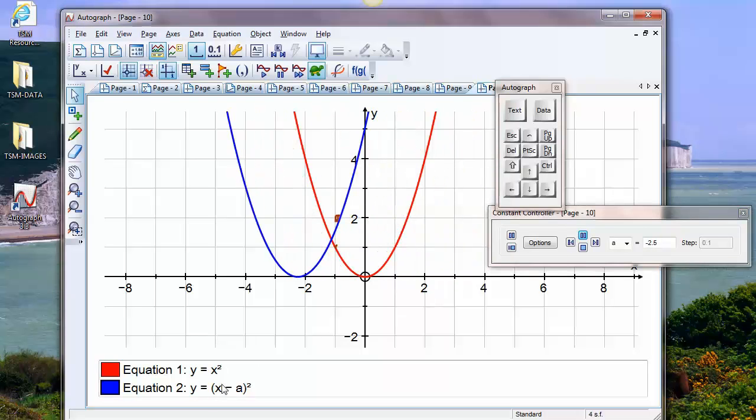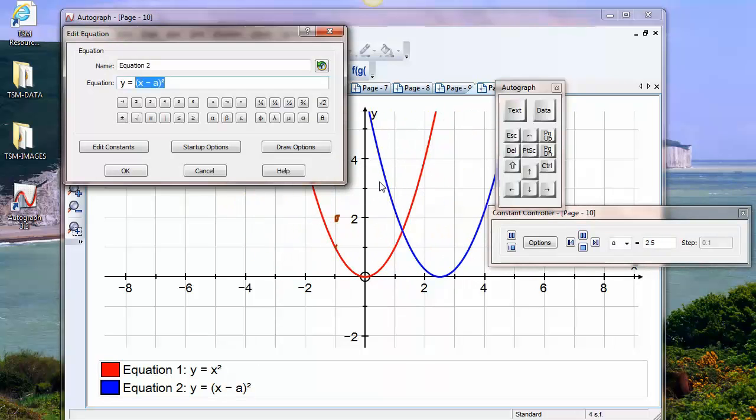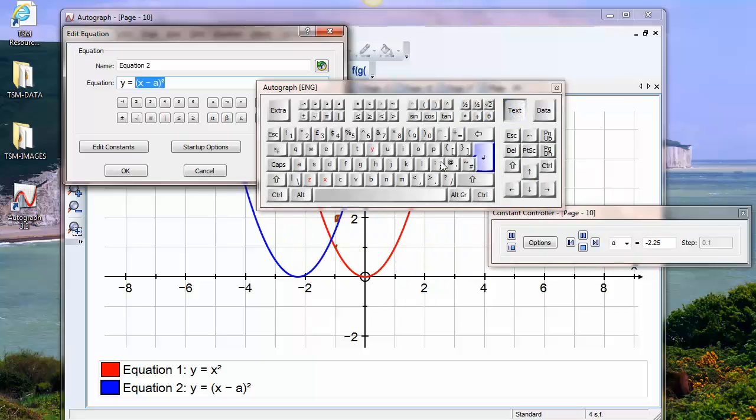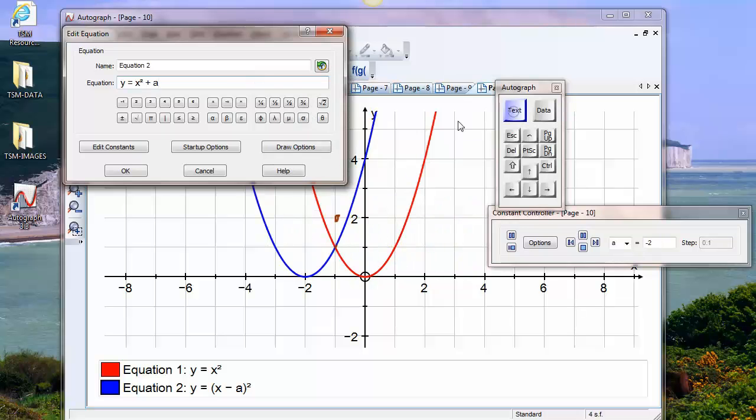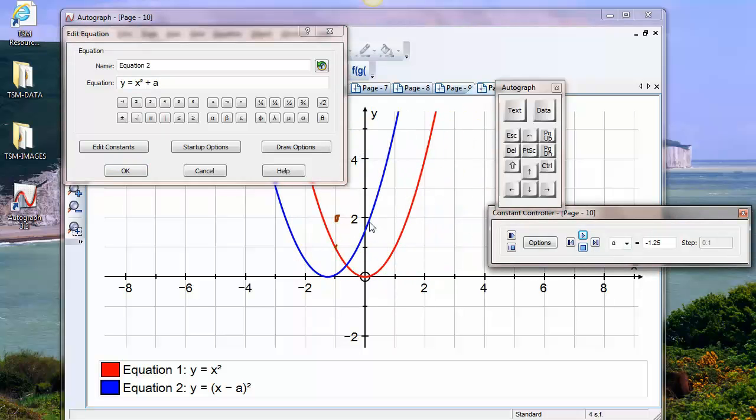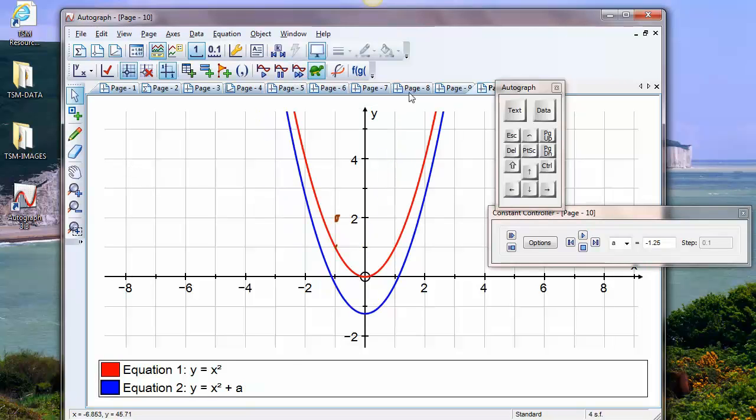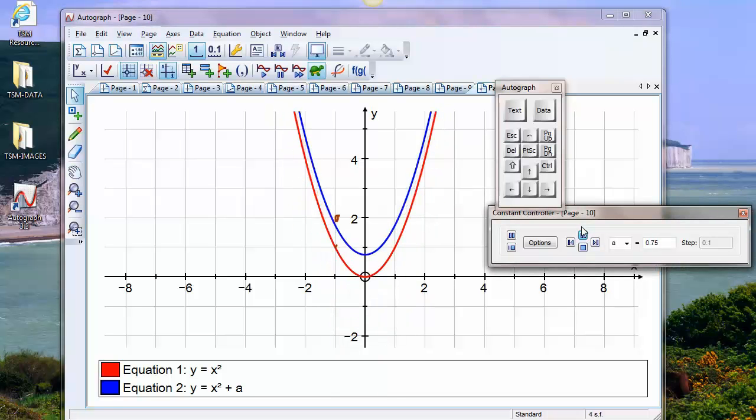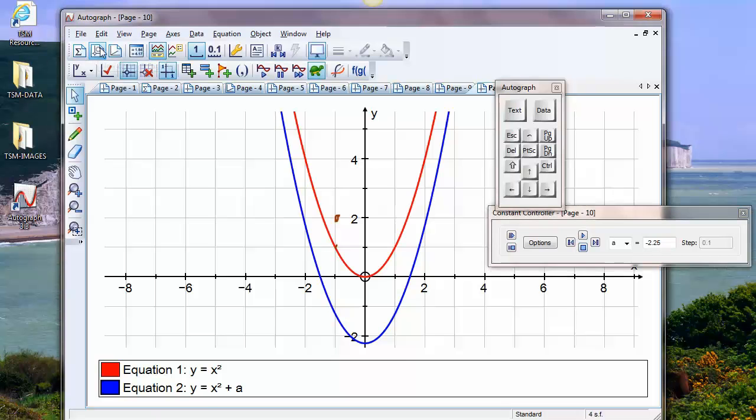The final one is to do x squared plus a. This is probably the easiest of the lot. x squared plus a. That's going to go up and down, again depending on where we stop. If we stop at minus 1.25, we're going to start down here and move up. OK, ready, steady, go. So those are the various transformations of y equals x squared that they have to learn about.